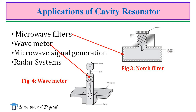The second application is the wave meter, used for measuring frequency. Cavity dimensions are changed by a screw; when the incoming signal frequency in the waveguide matches the resonant frequency of the cavity, the cavity absorbs power and the output of the waveguide is minimum. A calibrated micrometer scale gives the frequency directly. The next application is microwave signal generation — cavity resonators are used in reflex klystrons and magnetrons for generation of microwave signals.